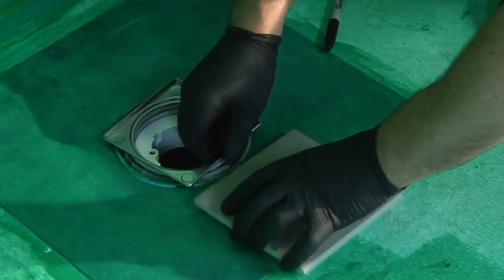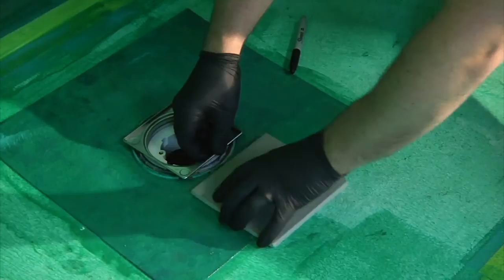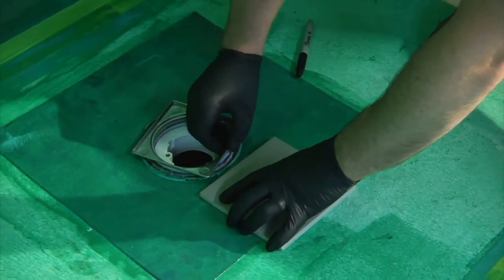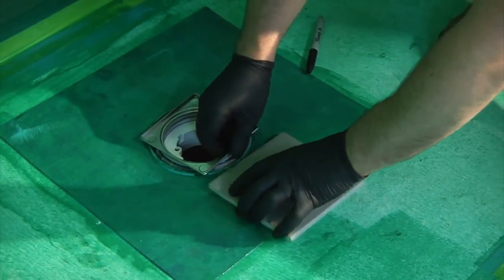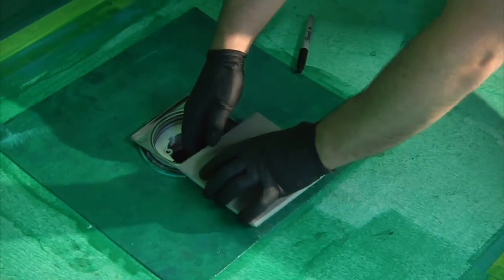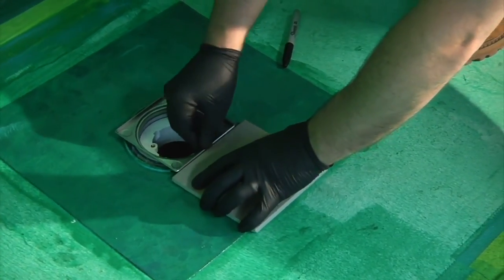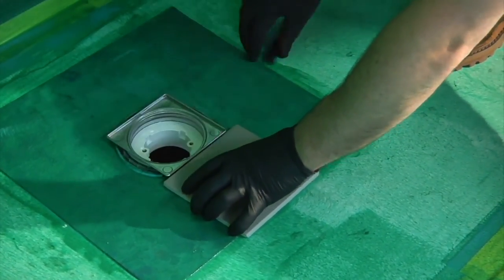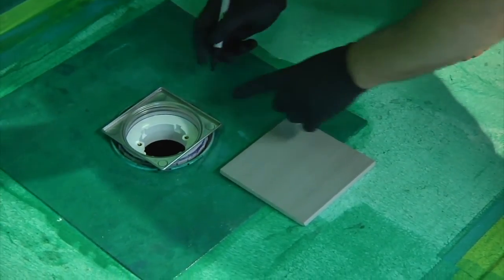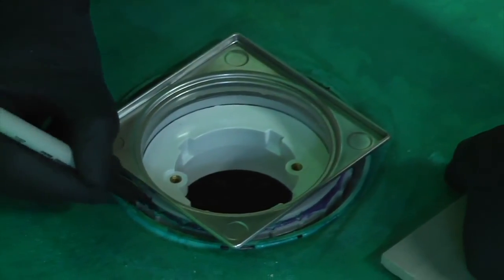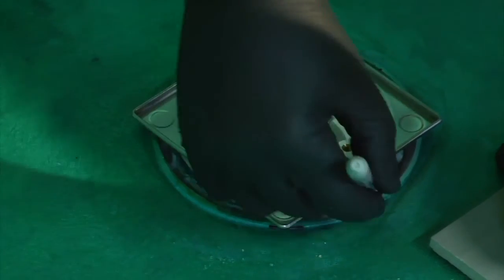To set the permanent height of the grate frame, place a floor tile beside the frame. Rotate the frame until the height is about 1/16th of an inch higher. This accounts for adhesive thickness. Now mark the position of the adjustment ring. This mark shows the final height position.